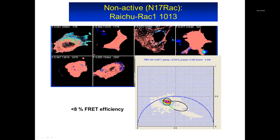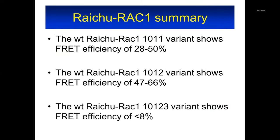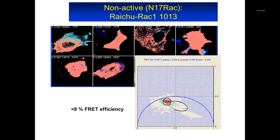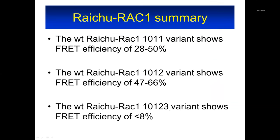Moving along the line I get all the FRET efficiency, and this gives a quantitative map of FRET efficiency across the cell. We also did this for non-active biosensors — biosensors that cannot FRET. In that case, we see that we can use biosensors to sense almost every molecule we want in the cell using proper biosensors. This is what we did with Liz Hinde, who is now in Australia, determining the behavior of many biosensors using this approach to calculate the FRET efficiency.